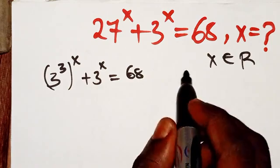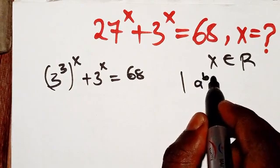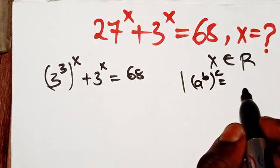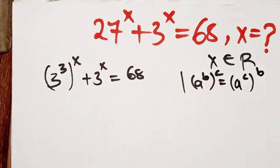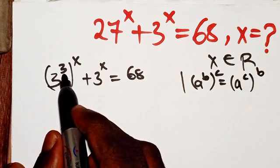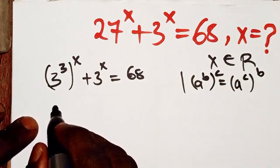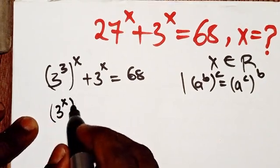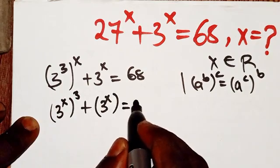Now I am going to apply one of the laws of indices: when you have (a^b)^c, you can swap the positions of the powers. So I will take X inside and bring 3 outside, rewriting 3^(3x) as (3^x)^3. The equation is now (3^x)^3 + 3^x = 68.